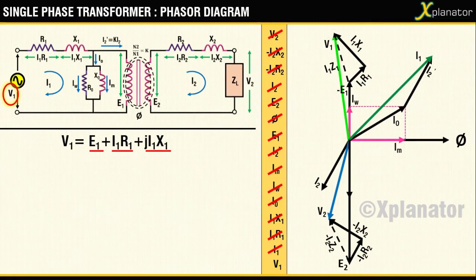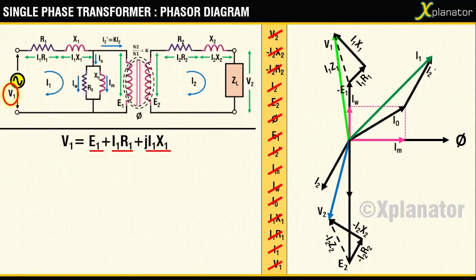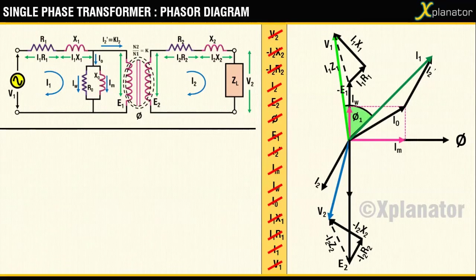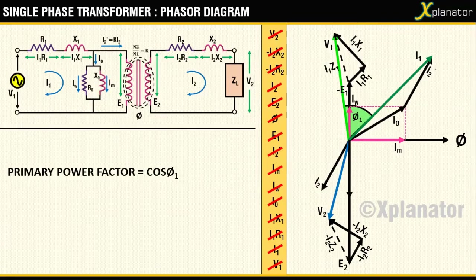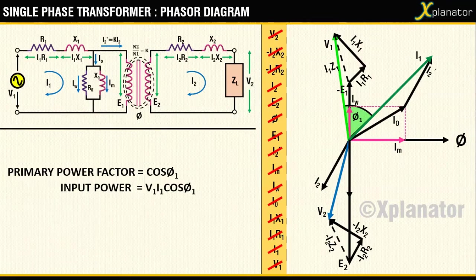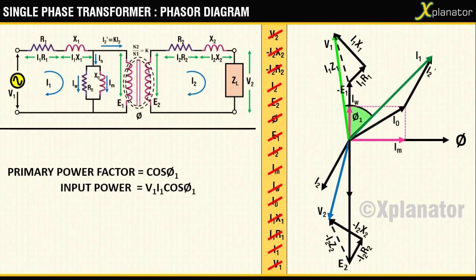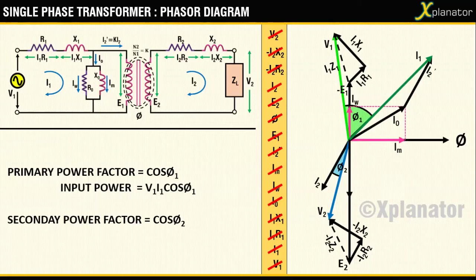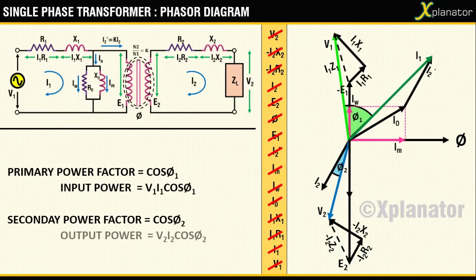The angle between the input voltage V1 and the input current I1 is phi1, and it gives the primary power factor of the transformer as cos(phi1). The input power to the transformer is hence V1 I1 cos(phi1). The secondary power factor of the transformer is cos(phi2), and the output power of the transformer is V2 I2 cos(phi2).